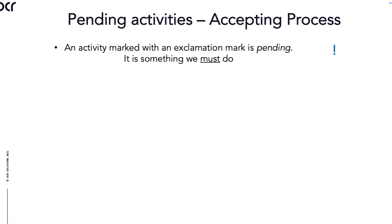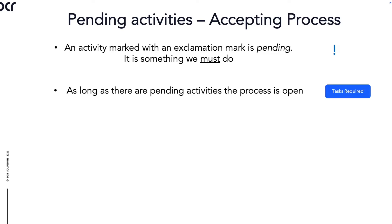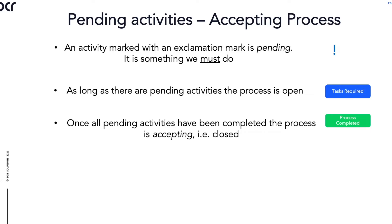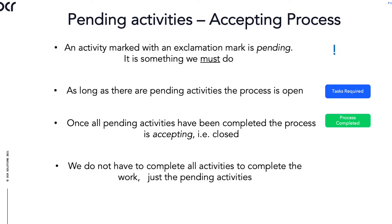Let's briefly talk about pending activities and accepting processes. An activity marked with an exclamation mark is pending — it is something we must do. As long as there are pending activities, the process is open, indicated with the blue circle. Once all pending activities have been completed, the process is accepting — that is, closed — and shown with a green circle. We do not have to complete all activities to complete the work; we just have to complete the pending activities.